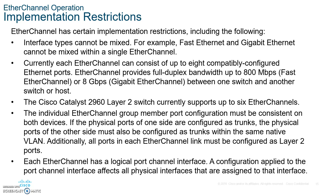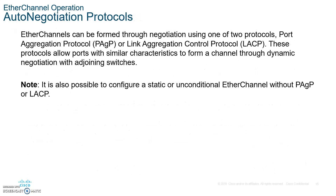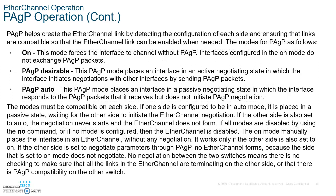EtherChannel can be formed through negotiation using two protocols. The first is Port Aggregation Protocol, called PAgP. The second is Link Aggregation Control Protocol, LACP. PAgP: number one, it's a Cisco proprietary protocol. Number two, the EtherChannel is added to the spanning tree as a single port. Number three, all ports must have the same speed, duplex settings, and VLAN information.